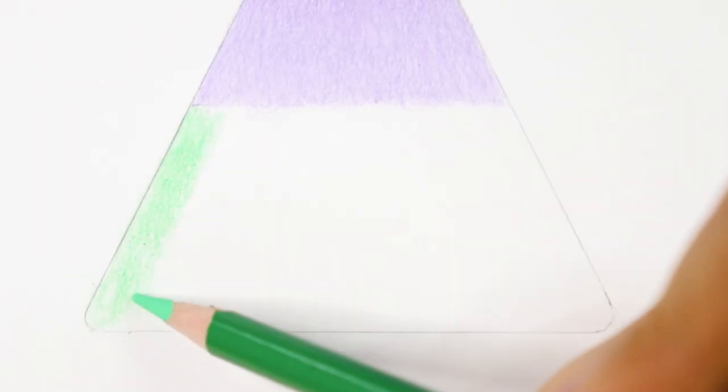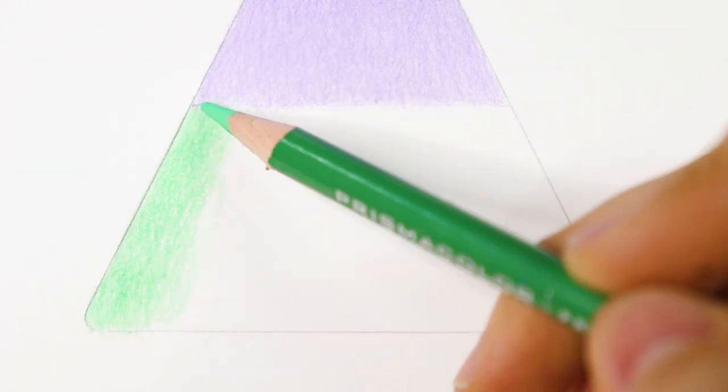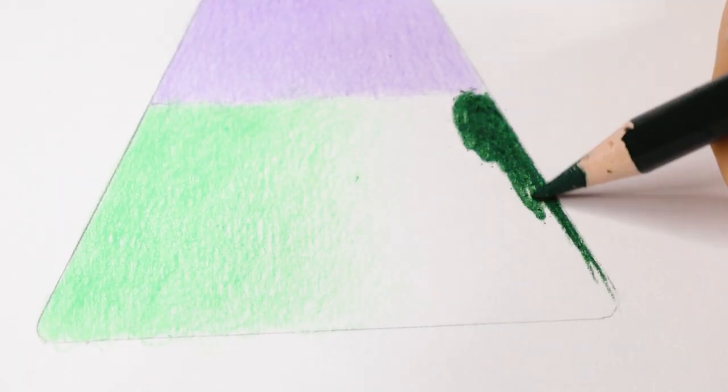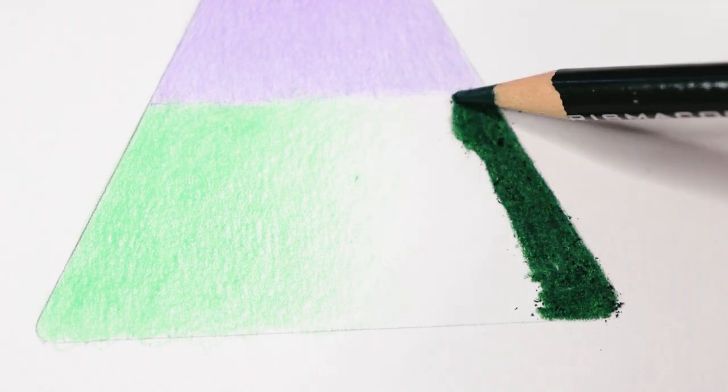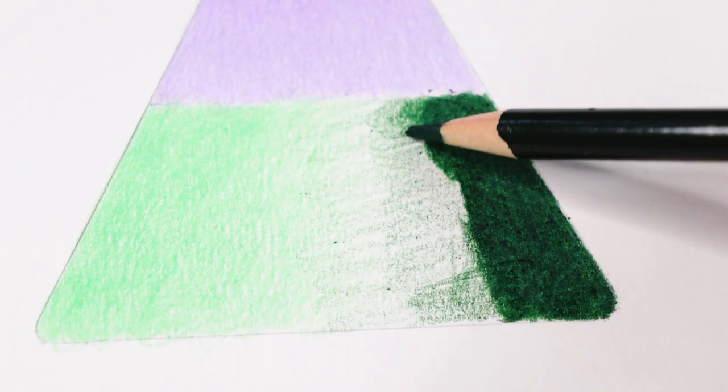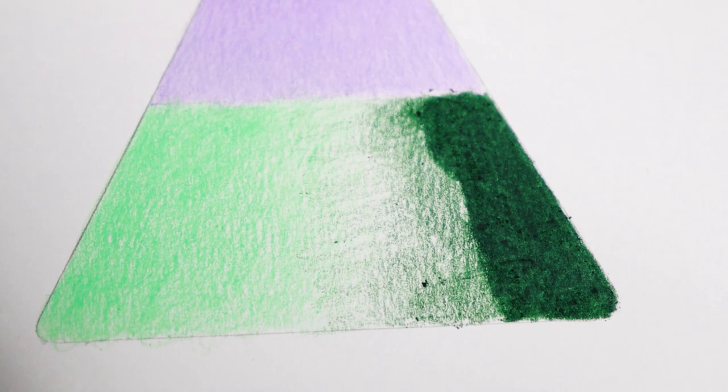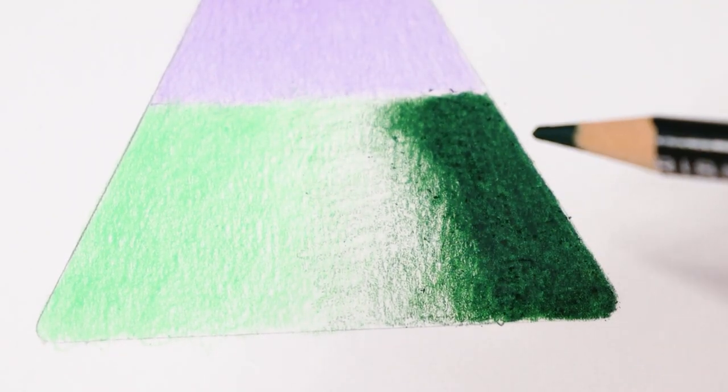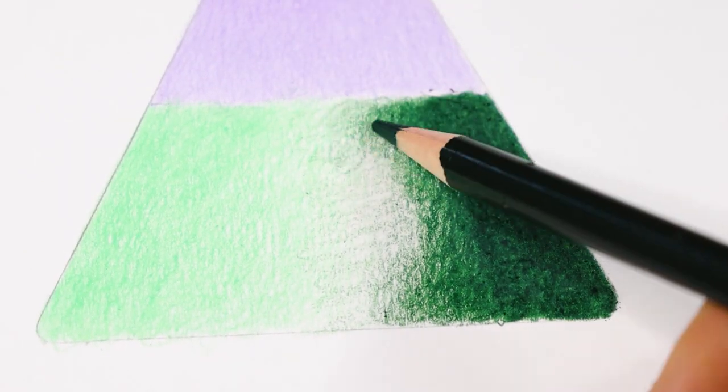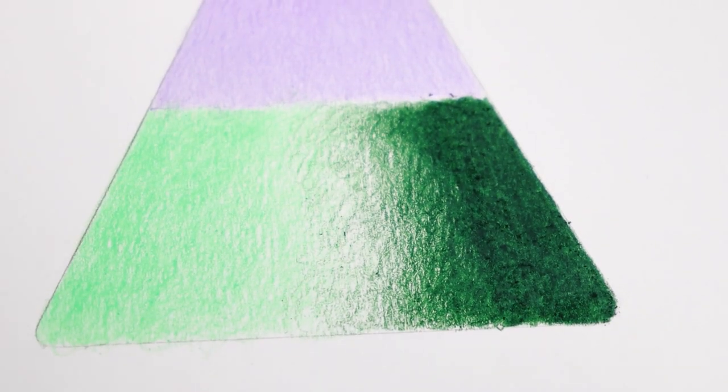To blend the colors I started out by pressing hard in the corners and decreasing the pressure as I got to the middle of the area. I did that to avoid dragging the dark pigment into the light one or the other way around. I am using circular movements to spread the pigment evenly on the paper. This will help to achieve a smooth blending.